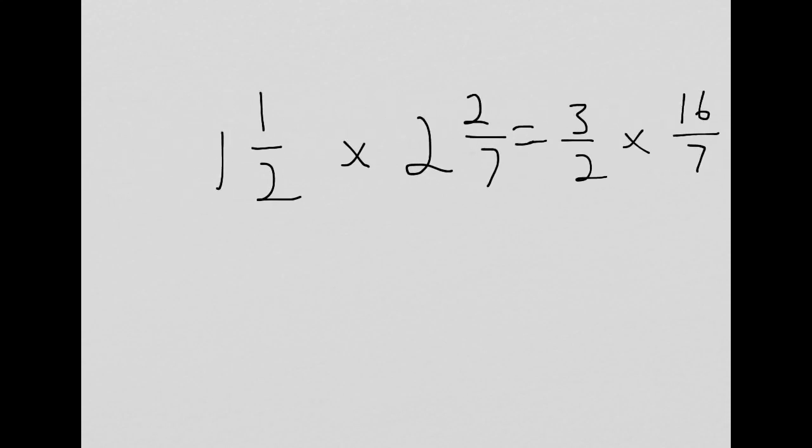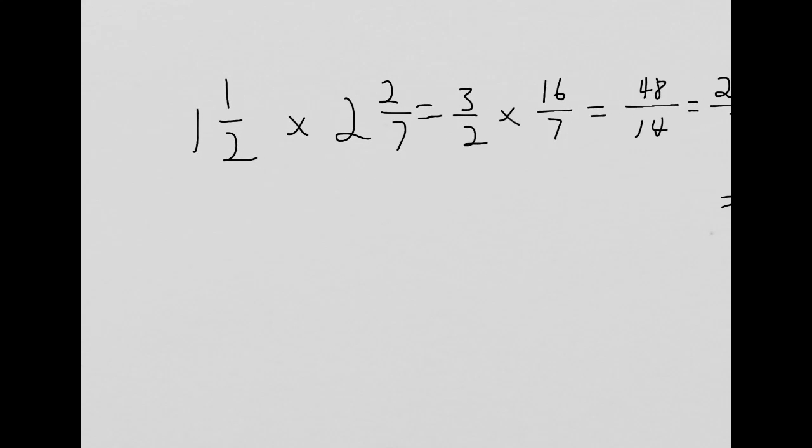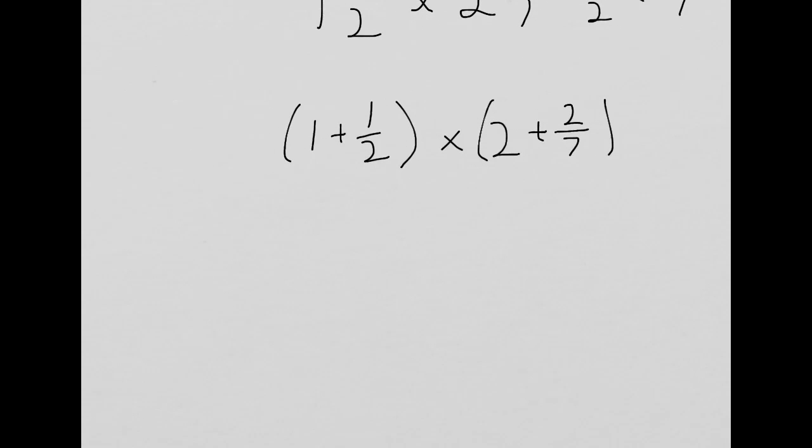Now, there is a way to deal with these mixed numbers directly, but you really have to use the area model. What you have to recognize is that this is 1 plus 1/2, and then it's times 2 plus 2/7. Because we've talked a lot about how mixed numbers are a shortcut way of adding a whole number and a fraction. It is beyond the scope of the fifth grade curriculum to know how to multiply this directly. You'll learn about this later on in school. The one method that we have learned to deal with a problem like this is by using the area model.